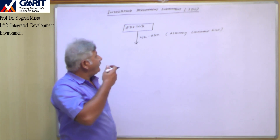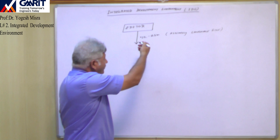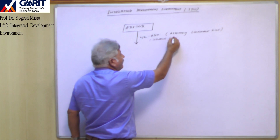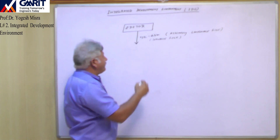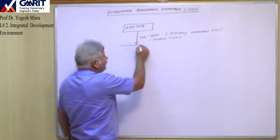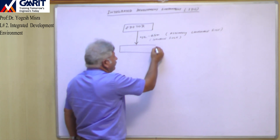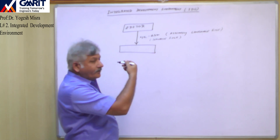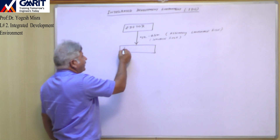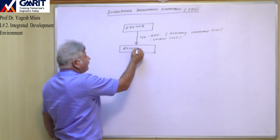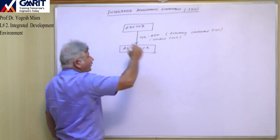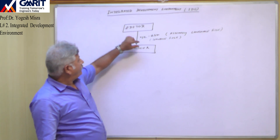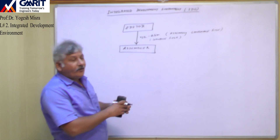Once we have the .asm file, this is also our source file. We will now pass this source file through another tool called the assembler. The source file will be passed through the assembler, and the assembler will generate two files.